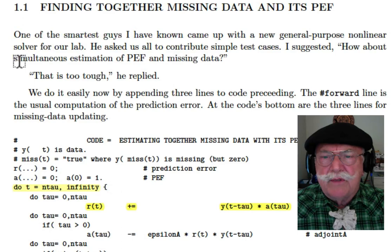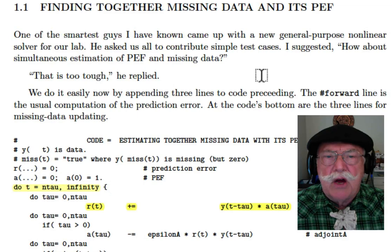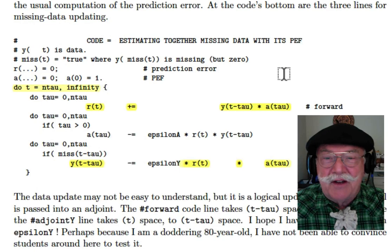One of the smartest guys I've ever known came up with a new general purpose nonlinear solver for our lab. He said, give me a simple test case. So I said, how about this one? Simultaneous estimation of a prediction error filter and its missing data. And he said, that's too tough. And this is a smart guy. Now I'm going to show you how easy that problem is. It may not be easy to understand it, but it's really easy to solve it.